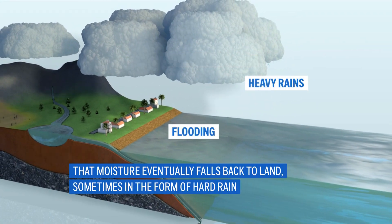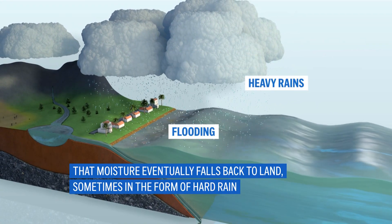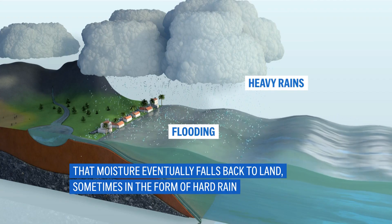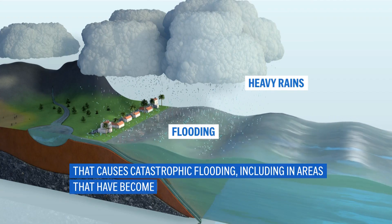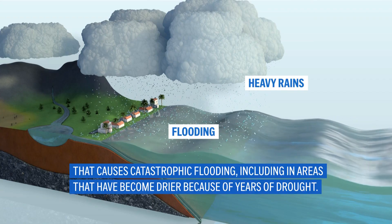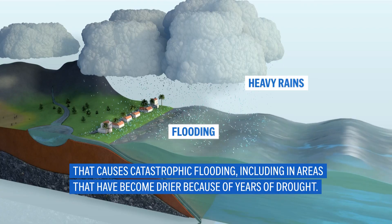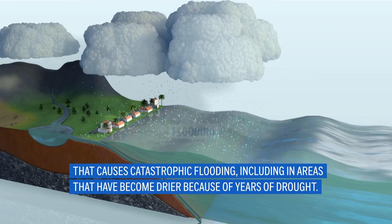That moisture eventually falls back to land, sometimes in the form of hard rain that causes catastrophic flooding, including in areas that have become drier because of years of drought.